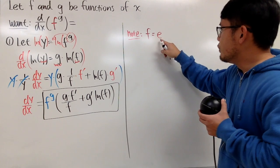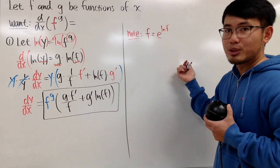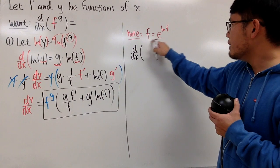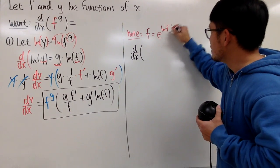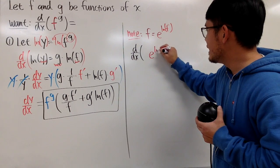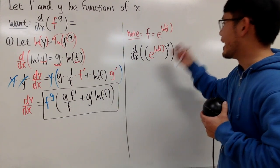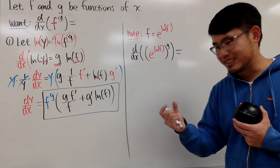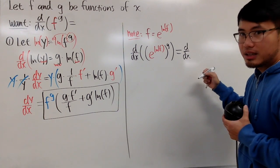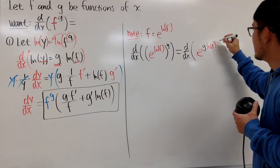We know that e and ln cancel each other. So just write e to the ln(f), and e and ln will cancel each other out — that's pretty much it. So when we differentiate f to the g's power, since f equals e to the ln(f), we can substitute that base in: write e to the ln(f), raised to the g's power. Now the base is the nice number e, and this is a power-to-a-power situation, so we can multiply the powers. We get e to the power of g times ln(f).